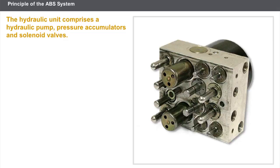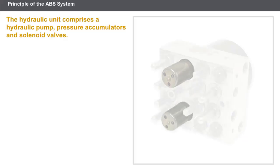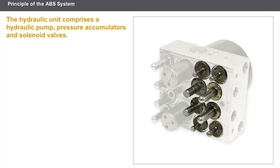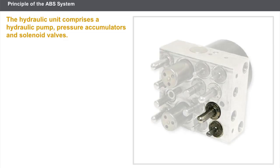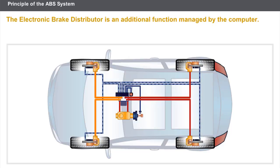The hydraulic unit comprises the following elements: a hydraulic pump, which prevents the pedal from being fully depressed during the ABS regulation phase; pressure accumulators; and solenoids that regulate the braking pressure for each wheel. Each wheel has an inlet solenoid and an outlet solenoid. The presence of ABS regulation on the rear wheels eliminates the need for a brake compensator. The electronic brake distributor is an additional function managed by the computer, which modulates the pressure to the rear wheels.